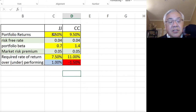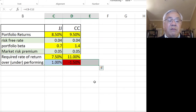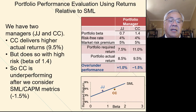The initial assumption was incorrect. Once we look at the risk borne by those two managers, we're actually better off with JJ. That's an illustration of how we can utilize the security market line — specifically looking at the portfolio beta — to do a better evaluation of managers rather than simply looking at their raw rate of return.